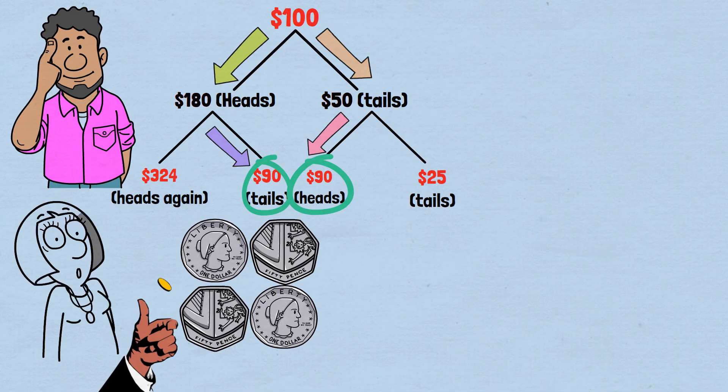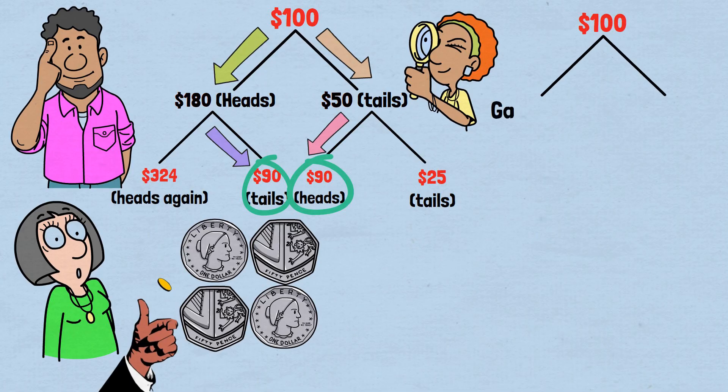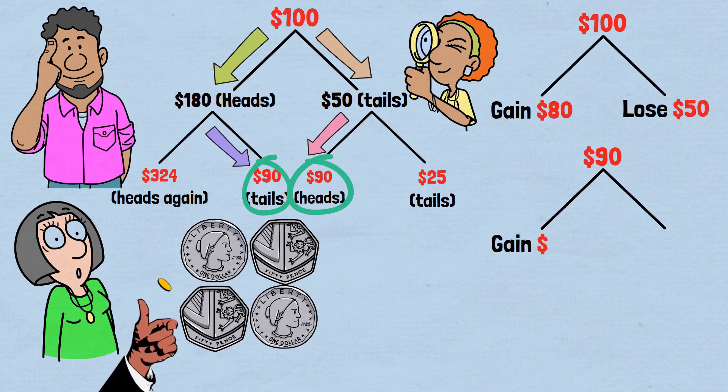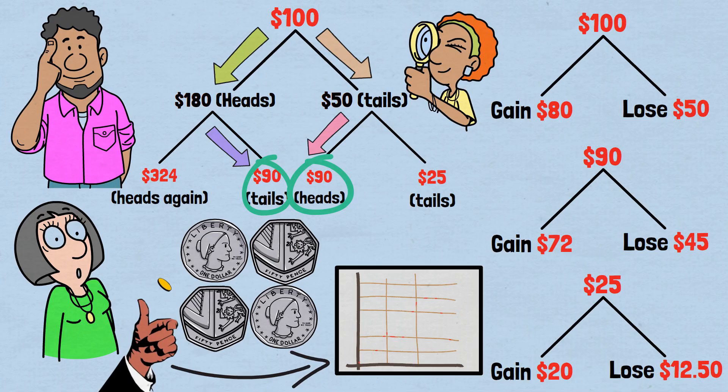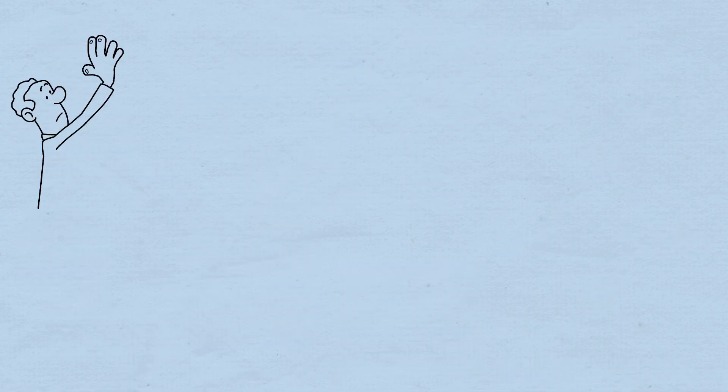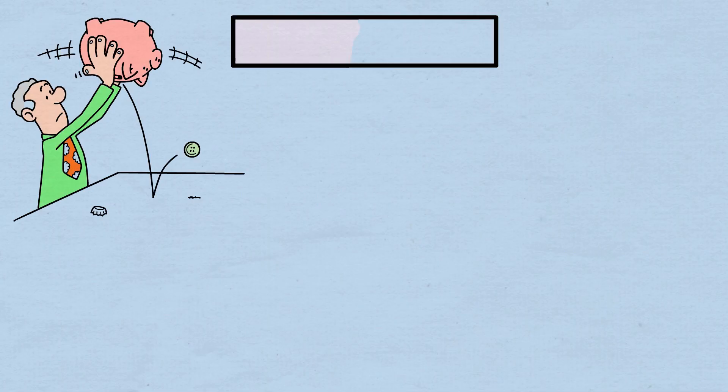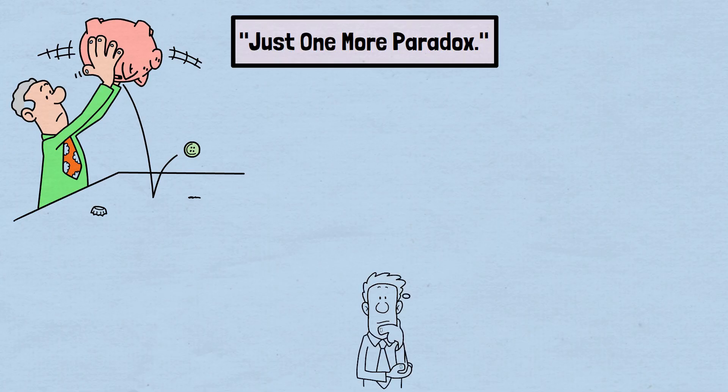Here's perhaps the most psychologically devastating aspect of this paradox. At every single decision point, the next flip looks attractive. Starting with $100, you can gain $80 or lose only $50. When you're at $90, you can gain $72 or lose only $45. Even when you're down to $25, you can gain $20 or lose only $12.50. Every single flip, in isolation, offers better upside than downside. Yet the cumulative effect is financial ruin for most players. This is why it's called the just-one-more-paradox. Each individual decision seems so obviously good that you keep thinking, just one more flip, the odds are in my favor.